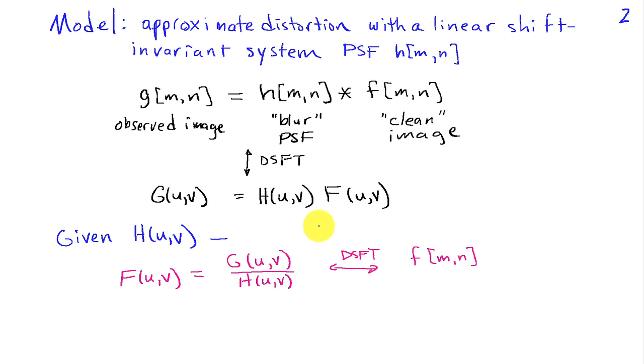If I know the blur, in other words I know the point spread function of my distortion, then it seems like a fairly simple matter, because I can recover F from G by taking what I observed, G, and dividing it by my known discrete space transform of my point spread function. And then if I do the inverse discrete space Fourier transform, I'll recover my clean image. Simply by undoing the effects of the blur in the frequency domain through division, we can get back the original image.